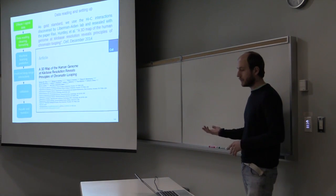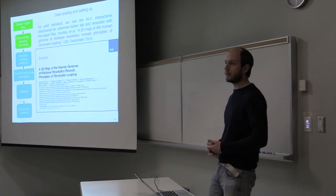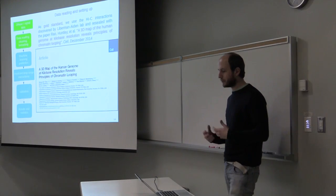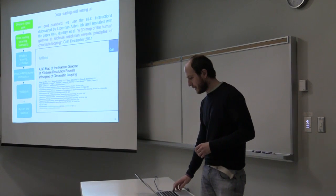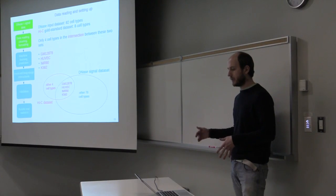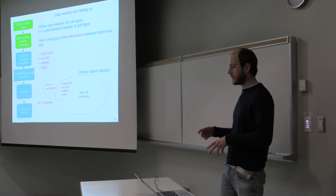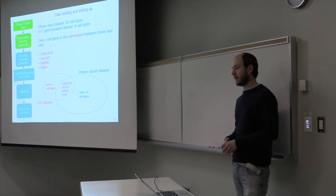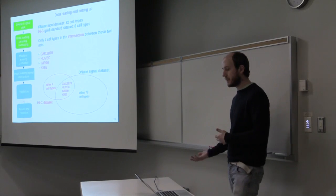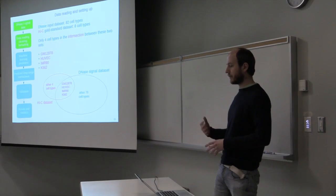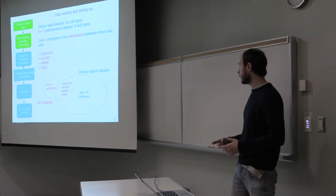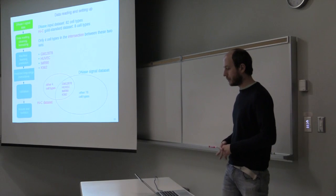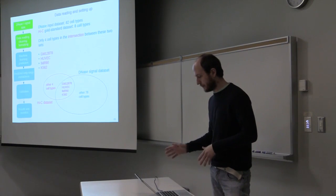It's important to mention that there are some differences in the number of cell types because the DNase input set has data for 82 cell types, while the Hi-C dataset only for eight cell types. And there are only four intersections that are the cell types that I show in purple.